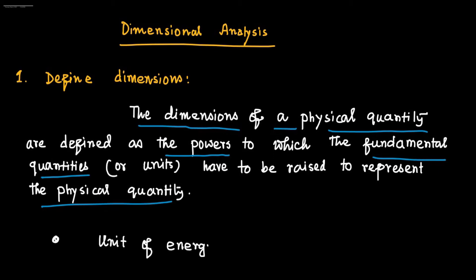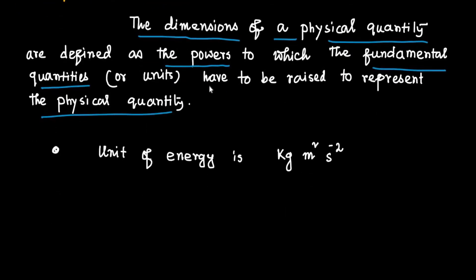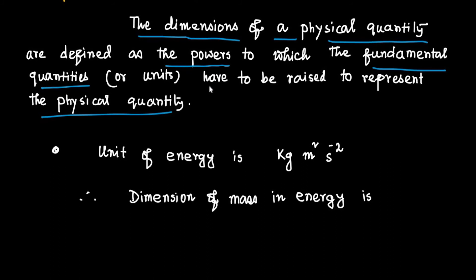The unit of energy is given by kg meter squared second to the power minus 2. Hence, the dimension of mass in energy is 1, because the power of kg, or the power of the unit of mass, is 1.